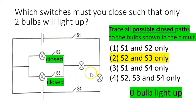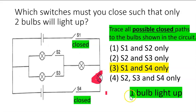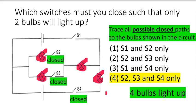This is the answer for option two: no bulbs will light up. For option three, only one bulb will light up. And now for option four, all four bulbs will light up.